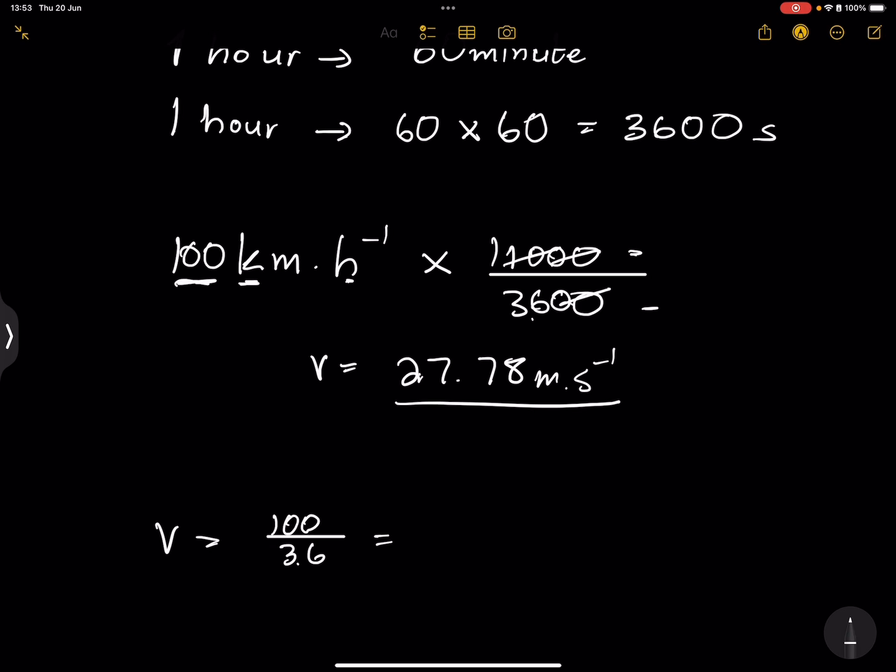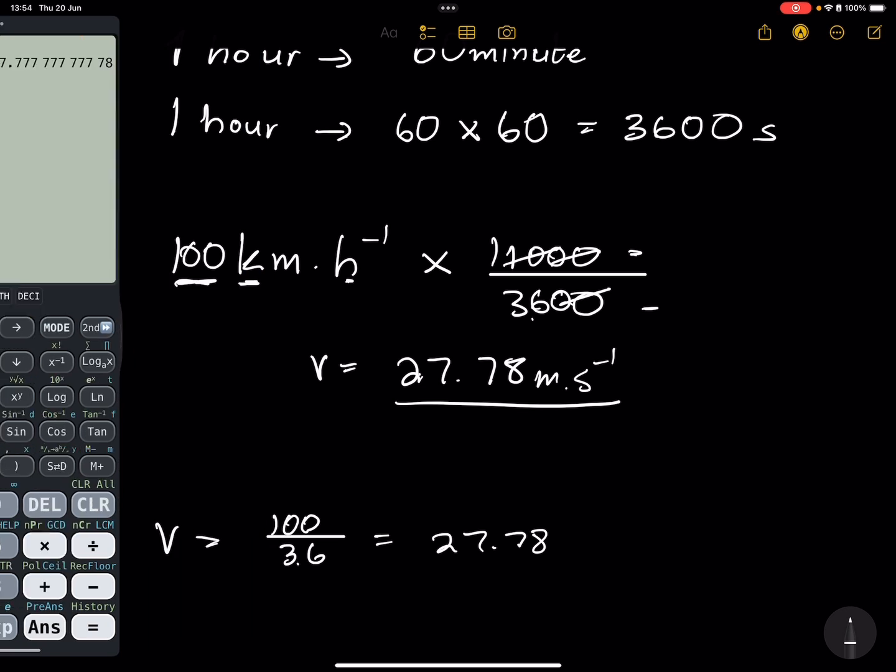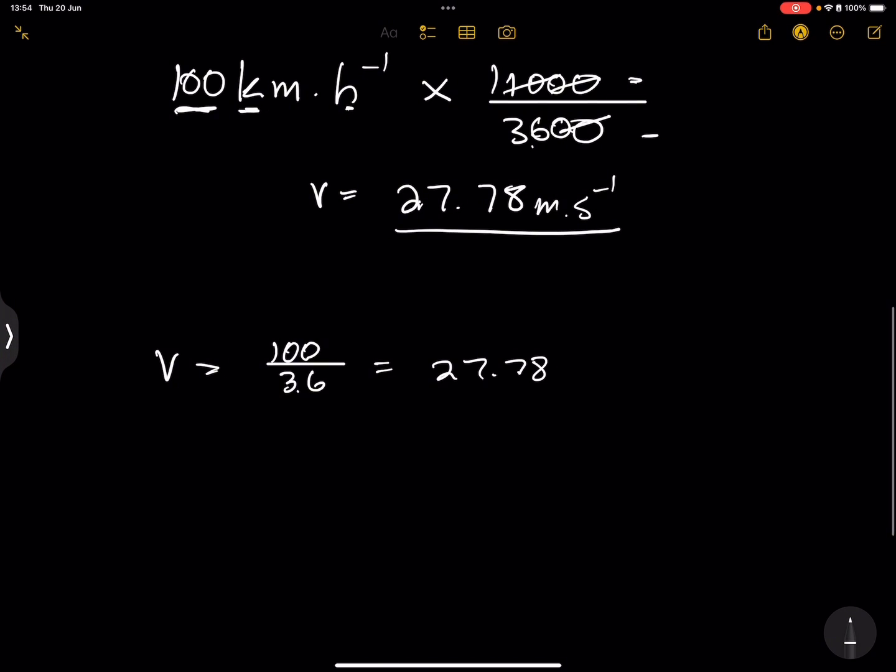Note, you'll get exactly the same answer. So 100 divided by 3.6, and we get 27.78. Now, ladies and gents, of course, what it means is that if we wanted to convert it the other way around.